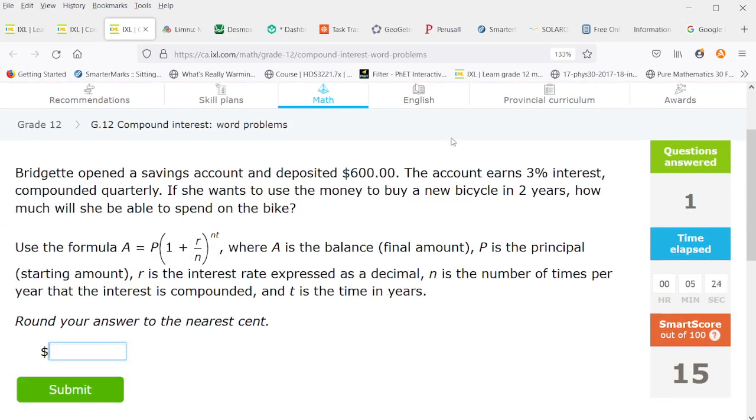So Bridget opened a savings account and deposited $600. The account earns 3% interest compounded quarterly. So the R is 0.03 and N is 4. She wants to buy a new bicycle in two years. So we have 600 times one plus 0.03 over four, all to the exponent eight. That is 636.96.